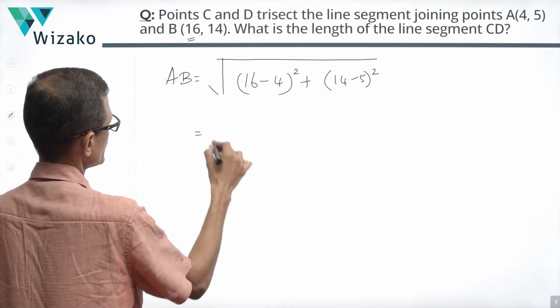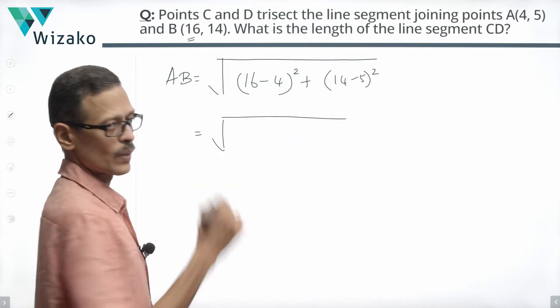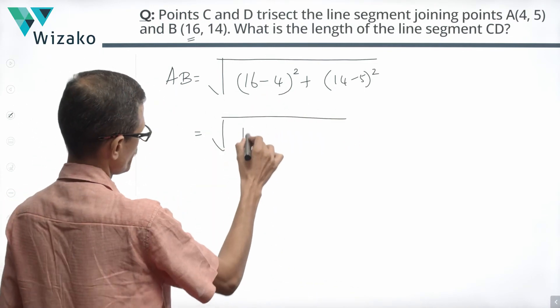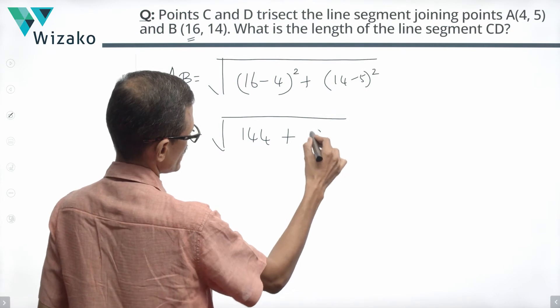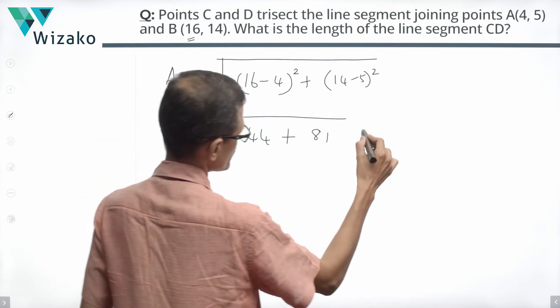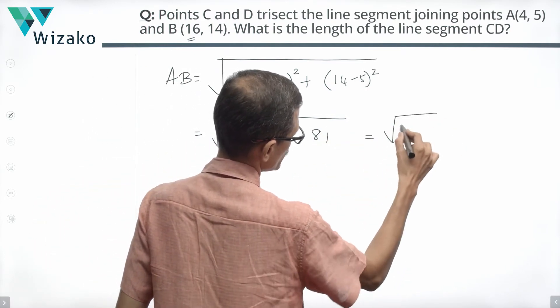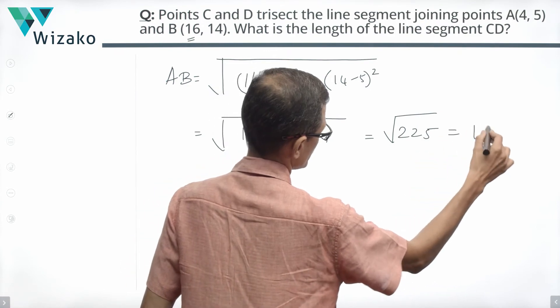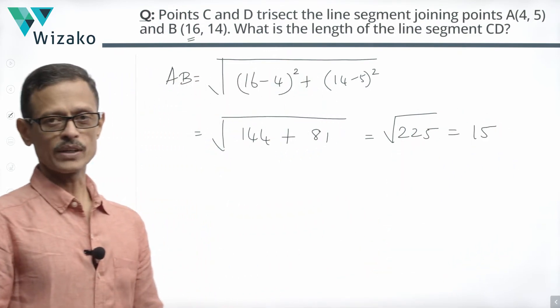So this would translate to 16 minus 4 is 12. 12 square is 144. 14 minus 5 is 9, 9 square is 81. 144 plus 81 is equal to 225 translating to the fact that AB is equal to 15 units.